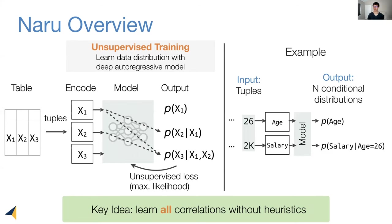Here's a concrete example over two columns, age and salary. We see that there are two output distributions and the second output is over the salary column, while conditioned on age equals 26.